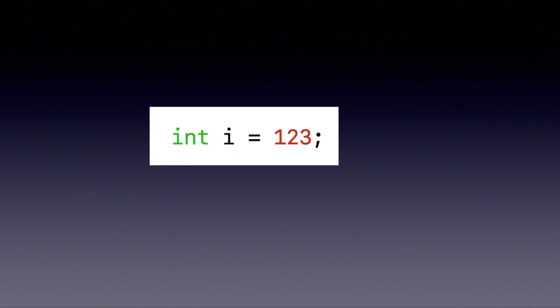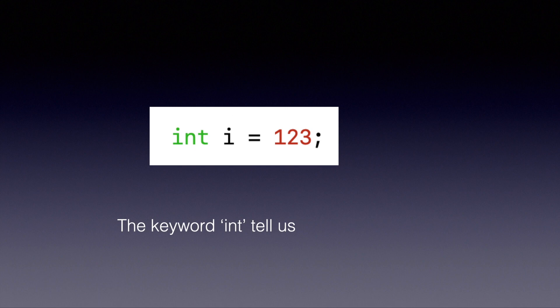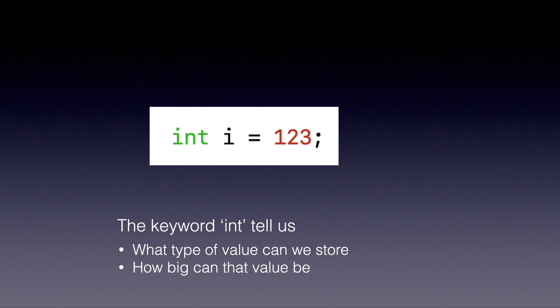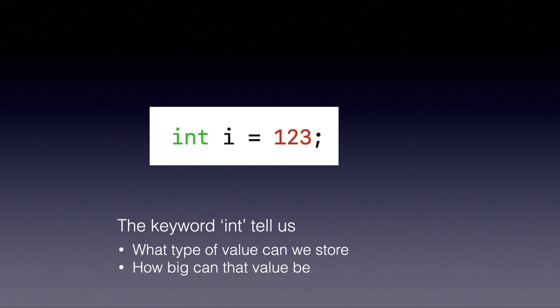On the slide we have a variable i, defined of the type int, and we are storing the value 123 into the variable i. The keyword int gives us two pieces of information. First, it tells what values can be stored into i — in this case we can store an integer, but we can't store anything other than an integer. For example, we cannot store 'abc' or a decimal number. The second piece of information is how big a number can be stored.